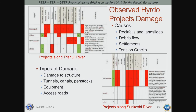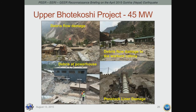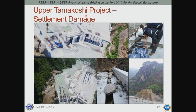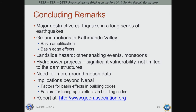Examples of damage include debris flow damage to workers' colonies, powerhouses, and penstock liners. One project currently under construction suffered settlement of its diversion dam, which was built on an alluvial deposit. The dam continued to settle not just during the main event but throughout the various aftershocks and even some foreshocks.